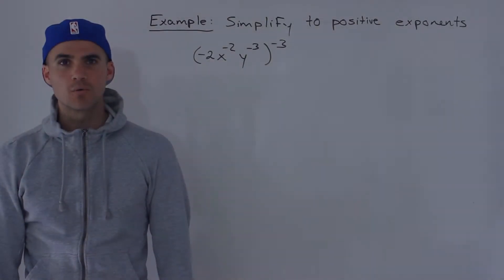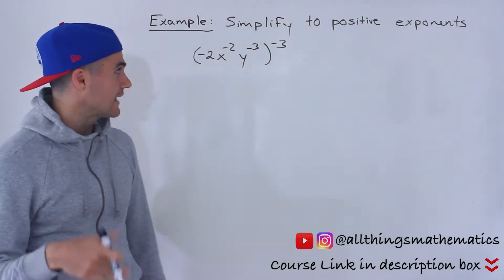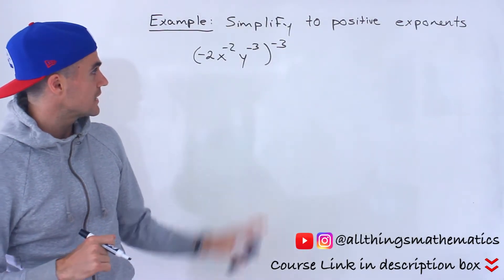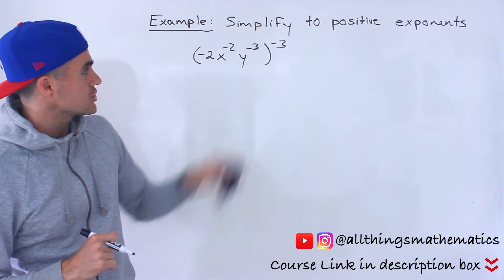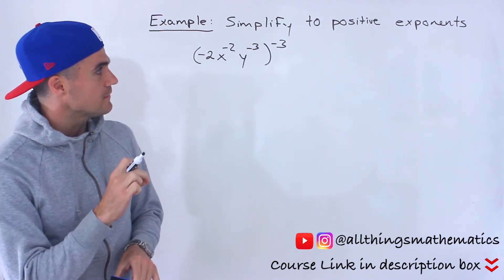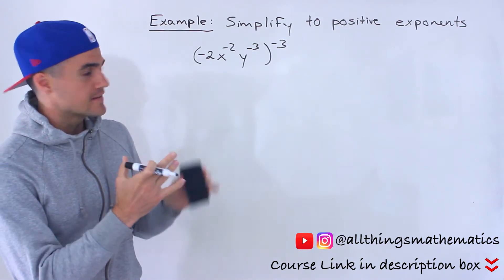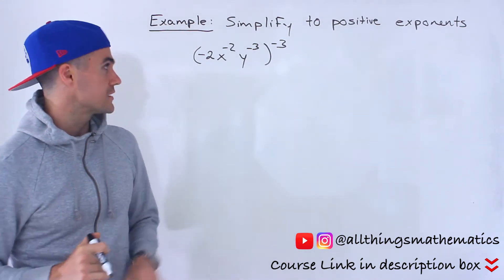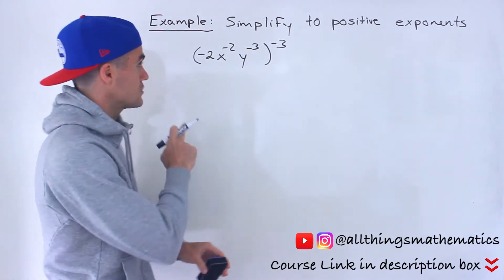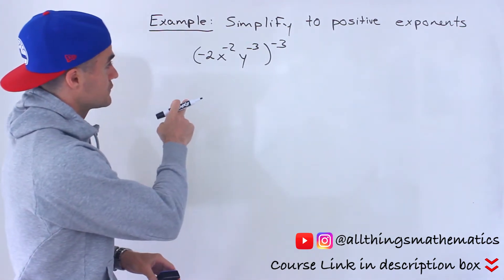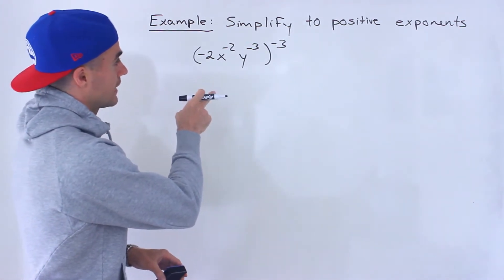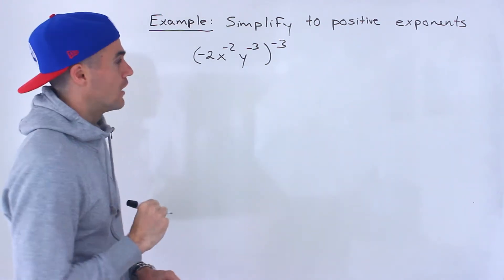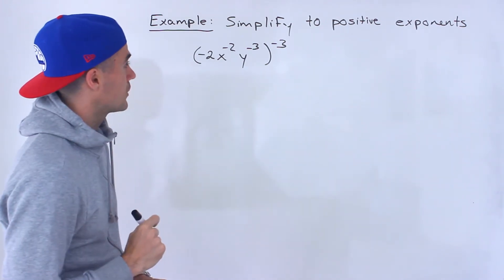What's up everyone, Patrick here. Welcome back. In this next question, what we have to do is take this expression and simplify it, and the simplified form has to have all positive exponents. So we have negative 2, x to the negative 2, y to the negative 3 in brackets, all to the power of negative 3.